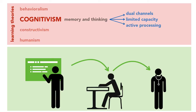The first is dual channels — people have separate information processing channels for visual materials and for verbal materials. The second is limited capacity — people can pay attention only to a few pieces of information in each channel at a time. And the third is active processing — people understand presented material when they pay attention to it, when they organize it into a mental model, and when they integrate it with other stuff they already know.